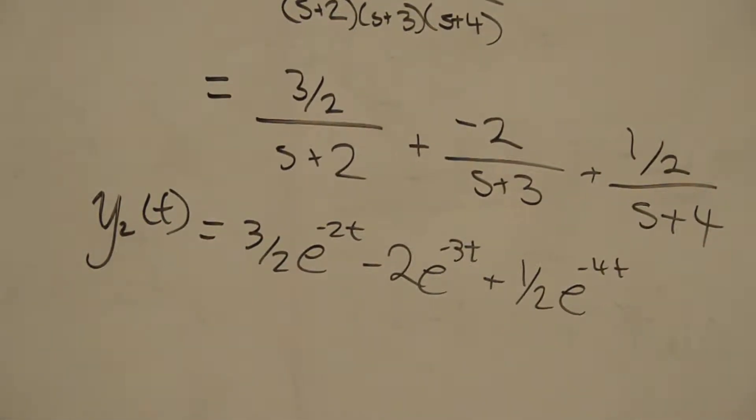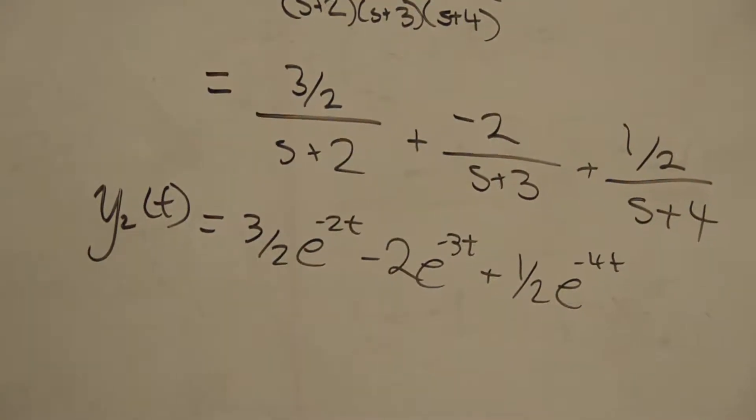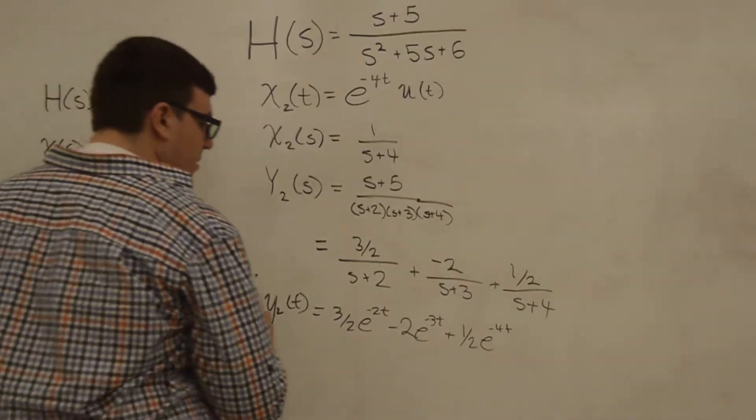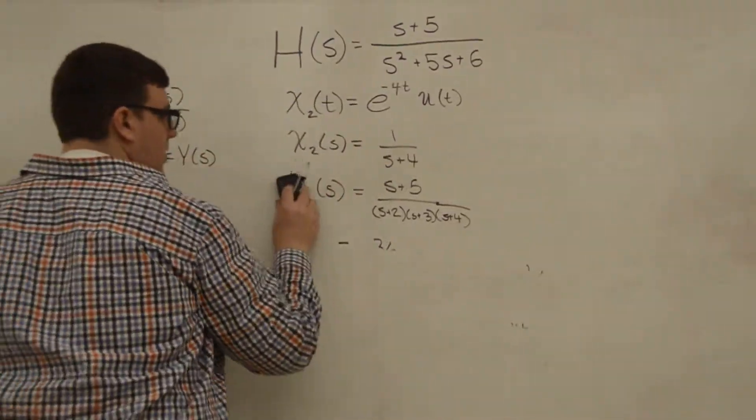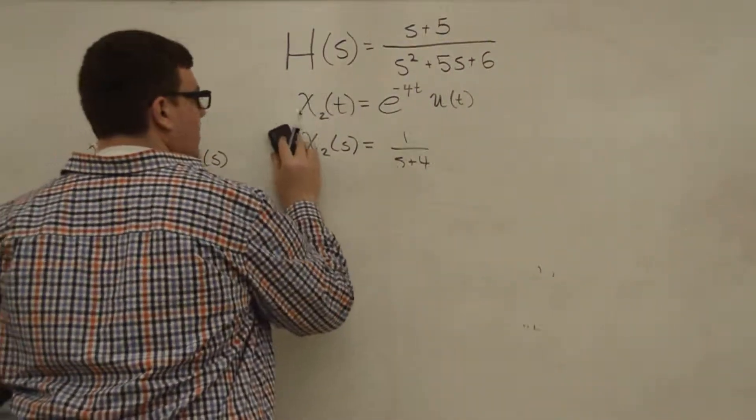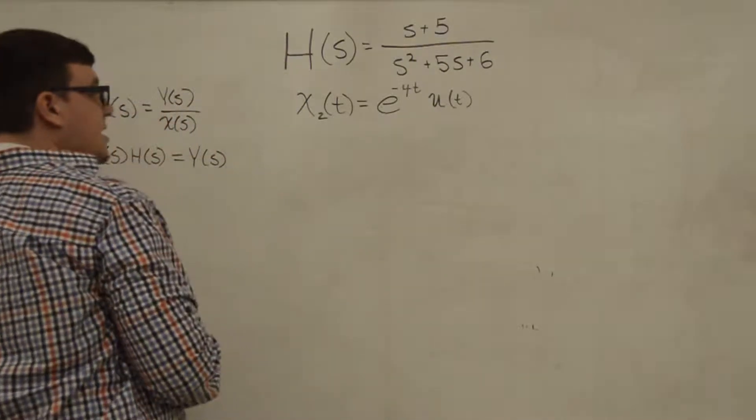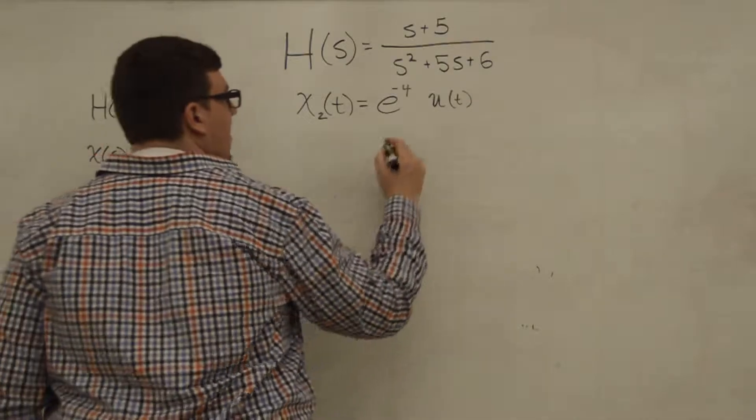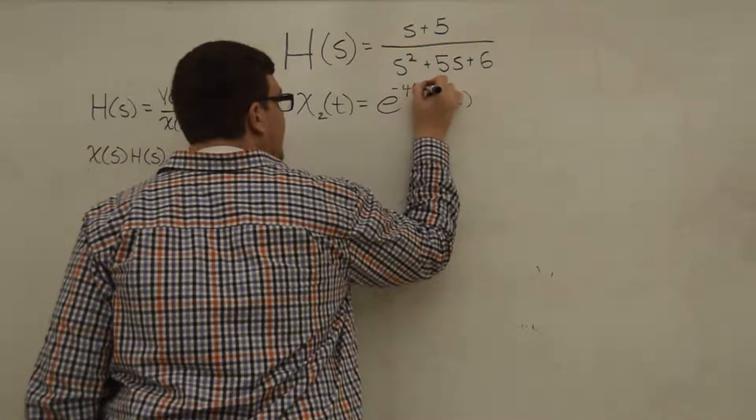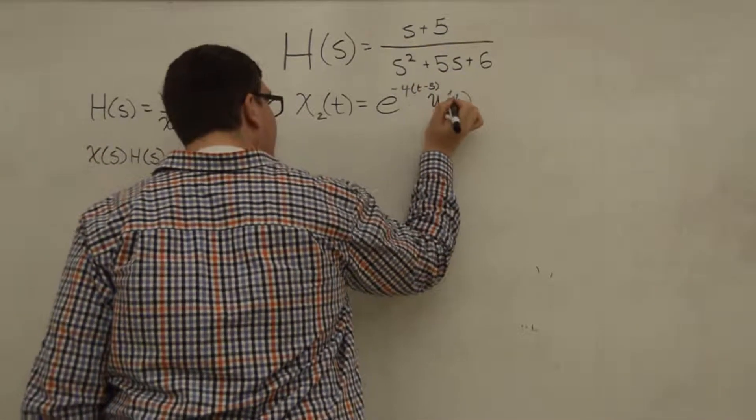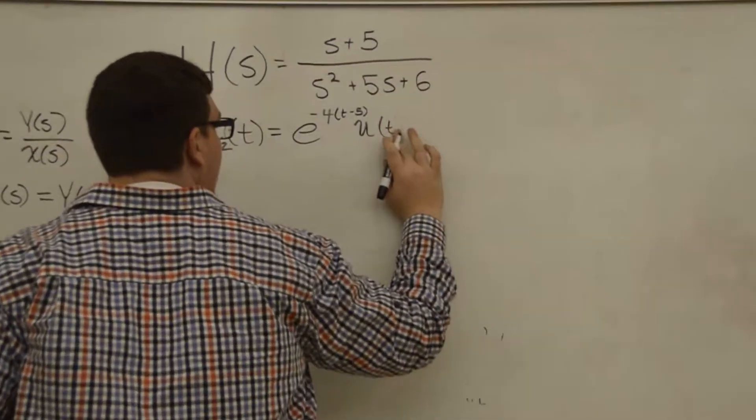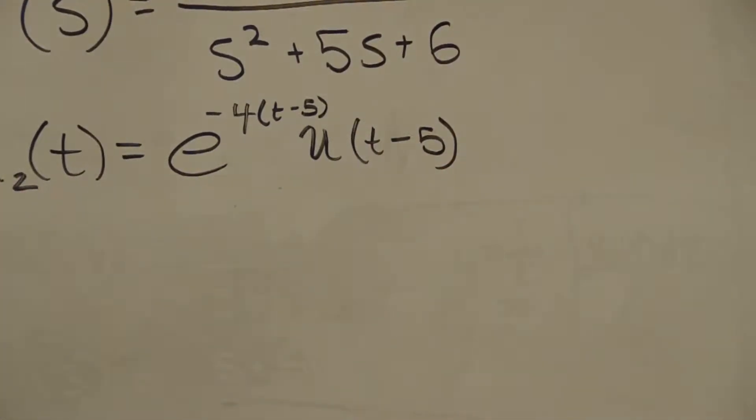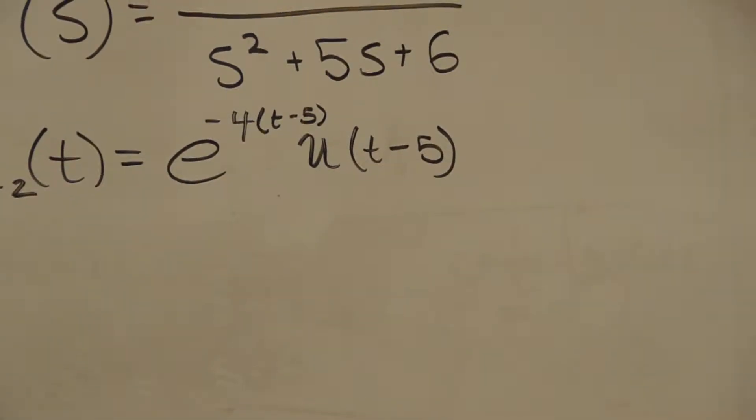Now for our third response, it was again very similar to x₂, except we have a time shift. So instead of it being -4t, it's -4(t-5), and the Heaviside function is also shifted by the same amount.